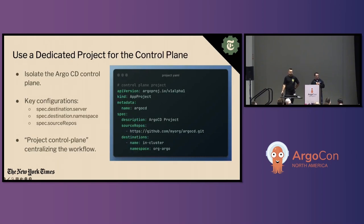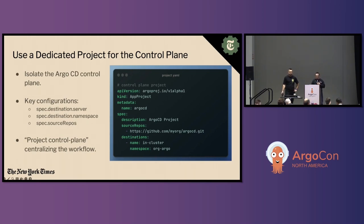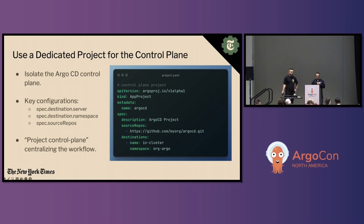Use a dedicated project for the control plane. Managing the Argo CD control plane through GitOps is essential. When projects are shared with other applications, there is an inherent risk that those applications could compromise the Argo CD namespace — this is why a dedicated project becomes pivotal. It's also essential to recognize that our control plane's attack surface extends to the Git repository housing the control plane resources, which is why securing GitOps repositories is also critical.